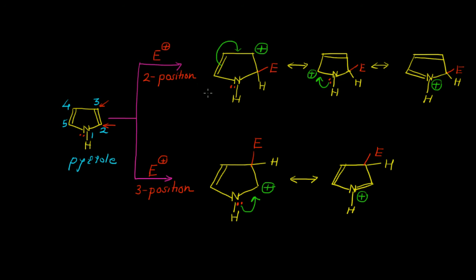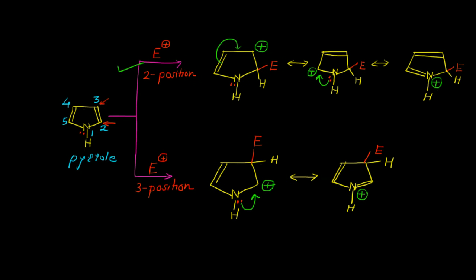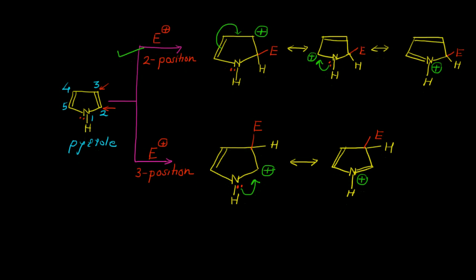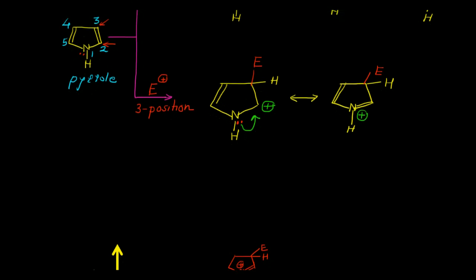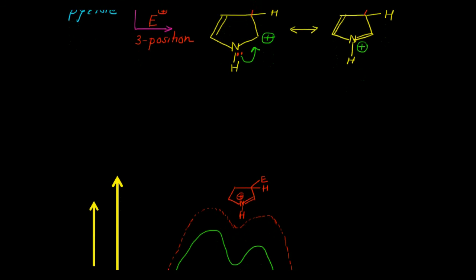Here we can see that the positive charge is coming on nitrogen, and we have only 2 resonating structures. When we have 3 resonating structures, that particular position is more stable and more predominant. So when we have electrophilic substitution reaction in a 5-membered ring, the electrophile predominantly enters at position number 2.